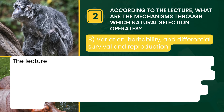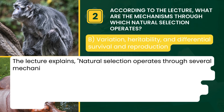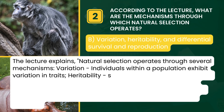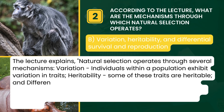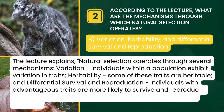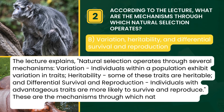The lecture explains that natural selection operates through several mechanisms: Variation — individuals within a population exhibit variation in traits. Heritability — some of these traits are heritable. And differential survival and reproduction — individuals with advantageous traits are more likely to survive and reproduce. These are the mechanisms through which natural selection operates.